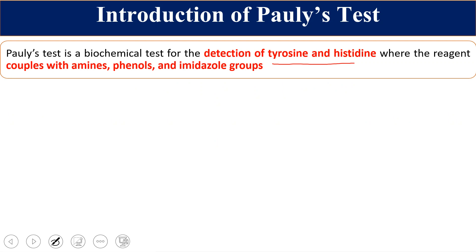Pauly's test is a biochemical test which we use for the detection of tyrosine and histidine. This test detects any kind of amines, phenols, or imidazole groups. Tyrosine has phenolic groups and histidine has imidazole groups. So any compound which has amines, phenols, or imidazoles can be detected by this test.